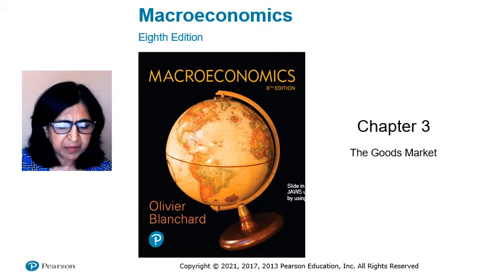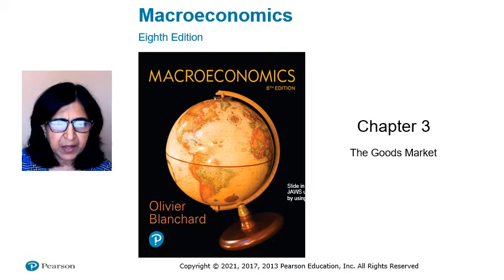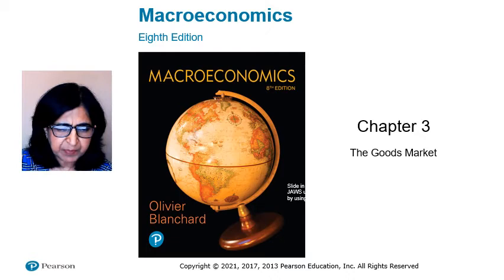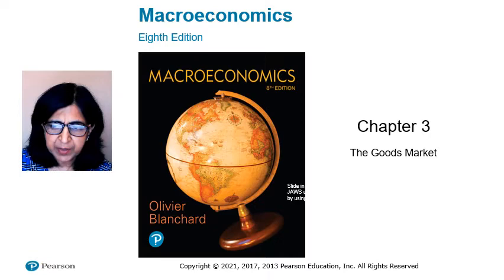In the medium run, 5 to 10 years, supply determines output. The amount of savings, investment, capital and technology determine output. In the long run, over decades, growth in savings, investment and technological change determine output. In this chapter, we focus on understanding the key components of demand and the interactions among production, income and demand.